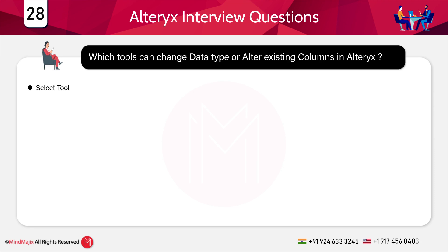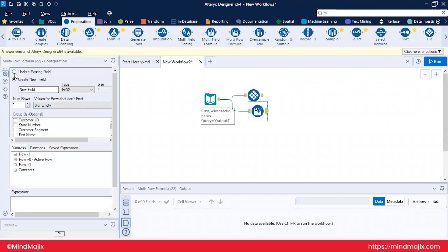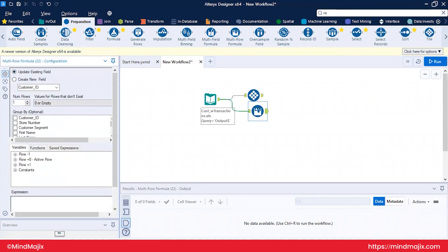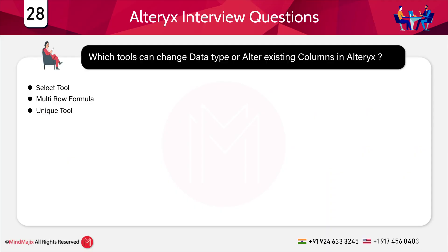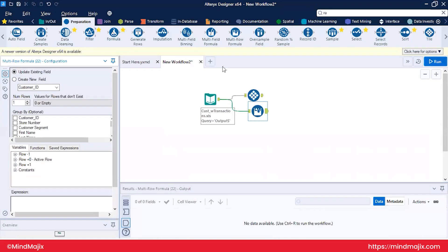Which tools can change the data type or alter existing columns in Alteryx? The Select tool — yes, you can use it to alter data type and columns. The Multi-Row Formula tool — yes, it has an option to 'update the existing field.' The Unique tool — no, you cannot change data type or alter existing columns. There is no 'filter all' tool. The answer is Select tool and Multi-Row Formula tool.